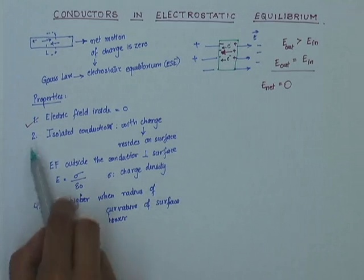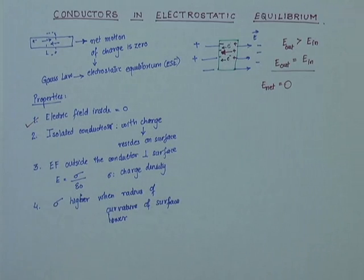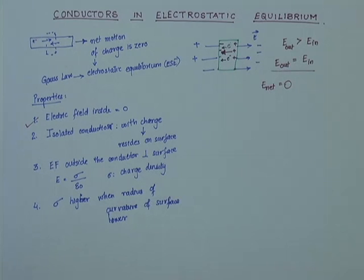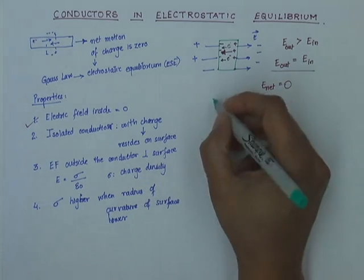Property 2 states that if I have an isolated conductor with some charge, that charge will reside only on the surface of the conductor — it does not reside inside the conductor. Let us see how we arrive at that.